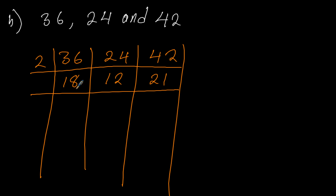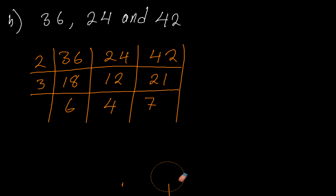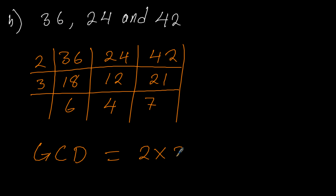We could have continued with 2 if all these numbers were even. But since 2 can't divide 21, and remember what I told you — we only use prime factors which divide all. So we go to 3. 18 divided by 3 we get 6, 12 divided by 3 we get 4, and 21 divided by 3 we get 7. So 6, 4, and 7 can't be divided by a common number, so we stop there. And this will mean that our GCD is 2 times 3, which is 6.